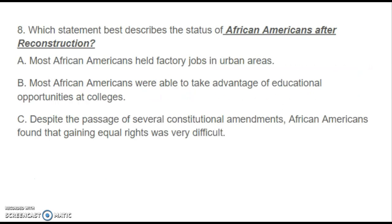Number eight: Which statement best describes the status of African Americans after Reconstruction? Is it A. Most African Americans held factory jobs in urban areas? B. Most African Americans were able to take advantage of educational opportunities at colleges? Or C. Despite the passage of several constitutional amendments, African Americans found that gaining equal rights was very difficult?